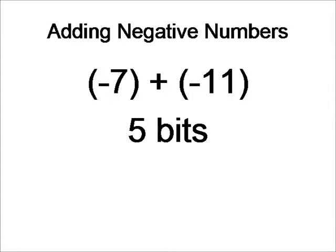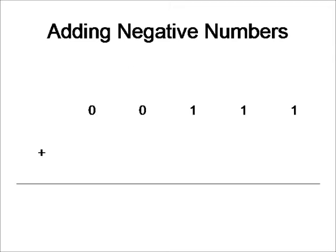Alright, so let's try adding two negative numbers together. We are going to add negative 7 and negative 11. And to show an overflow example, I am going to use 5 bits. So the first thing we are going to do is we are going to take the numbers 7 and 11 and invert them. First we will take the number 7. Then we are going to invert all the bits. And then we are going to add 1 to get our 2's complement number. And then we will do the same for 11, like so.